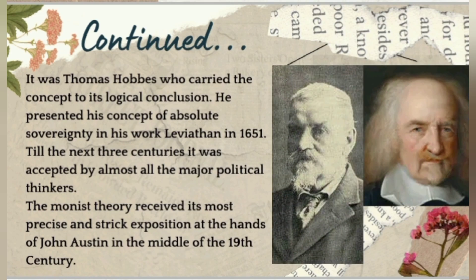Thomas Hobbes later presented the concept of absolute sovereignty in his work Leviathan in 1651, and for the next three centuries it was accepted by almost all major political thinkers. The monist theory received its most precise and strict exposition at the hands of John Austin in the mid-19th century, who presented the concept known as the Austinian theory of sovereignty, also called the monist theory of sovereignty.